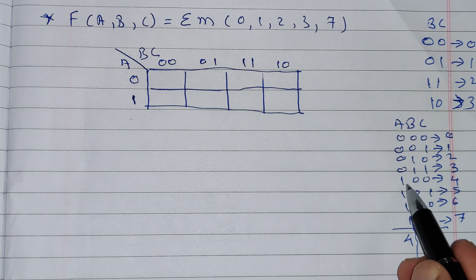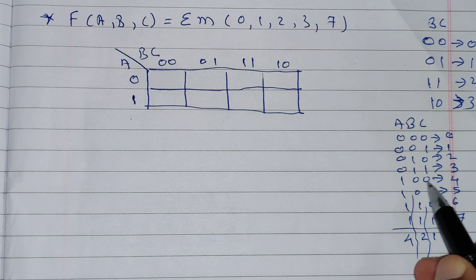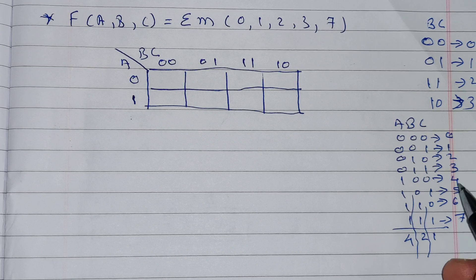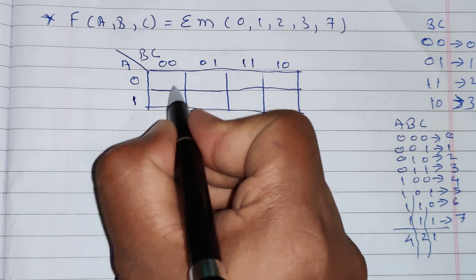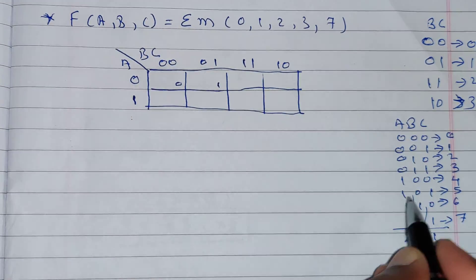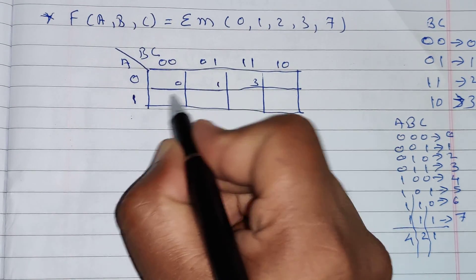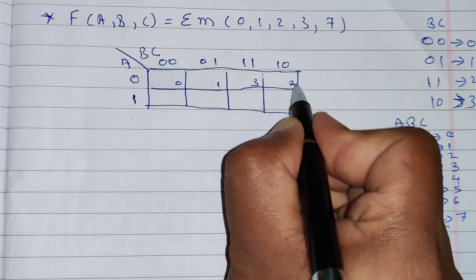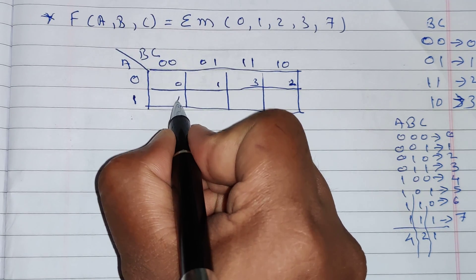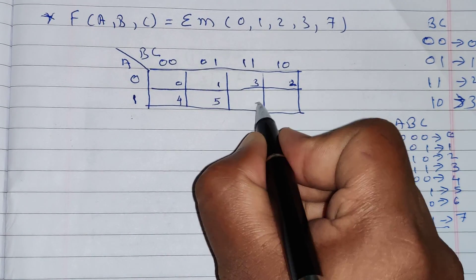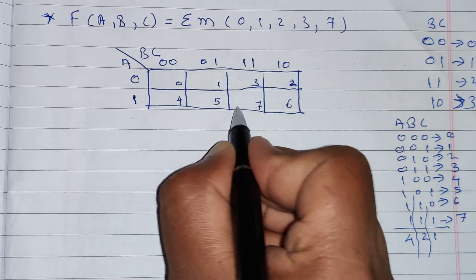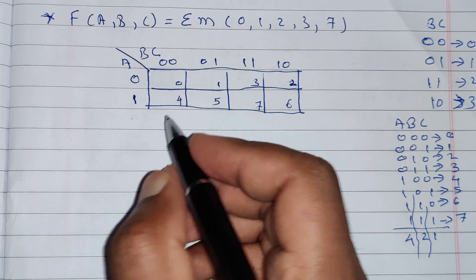For A=1, B=0, C=0, the minterm is 4 (4+0=4). For A=0, B=1, C=1, it is 3 (2+1=3). The pattern in the top row gives minterms 0, 1, 3, 2 and the bottom row gives 4, 5, 7, 6. So the full Kmap cell numbering is 0, 1, 2, 3, 4, 5, 6, 7.